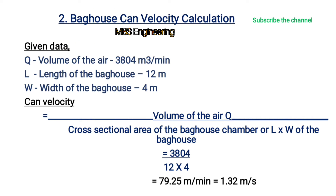Given data: Q, volume of the air, is 3,804 cubic meters per minute; L, length of the bag house, is 12 meters; W, width of the bag house, is 4 meters. Can velocity equals volume of the air divided by the cross-sectional area of the bag house chamber. After calculation, we get the value as 79.25 meters per minute or 1.32 meters per second.